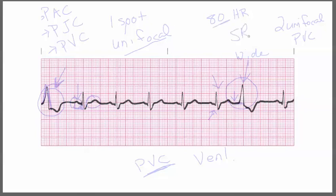So this is a sinus rhythm with two unifocal PVCs. That is how you can identify a premature ventricular contraction. They will look wide and bizarre, and they're going to look completely different from any other QRS complex. That's how we know these are PVCs — premature ventricular contractions.